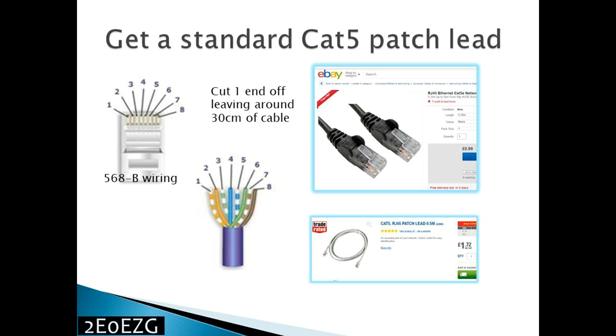Here in the UK the traditional wiring method is called 568B which follows the colour codes as shown on the screen. All you need to do is buy one of these patch leads, they'll cost you maximum a couple of pounds for a one or two metre one, and cut it down to approximately 30 centimetres.